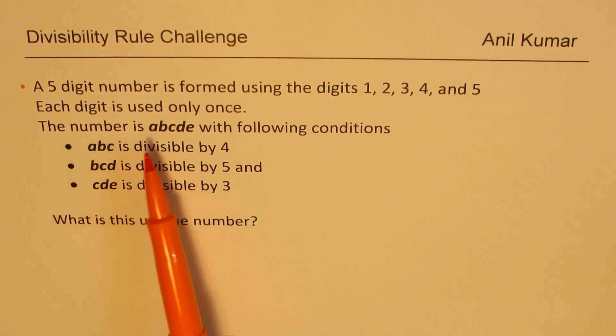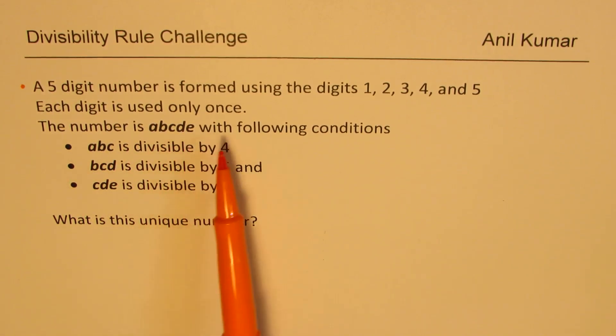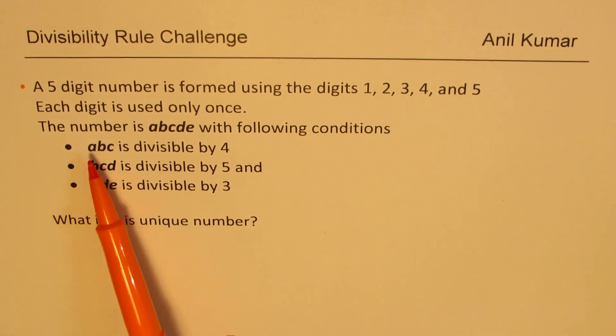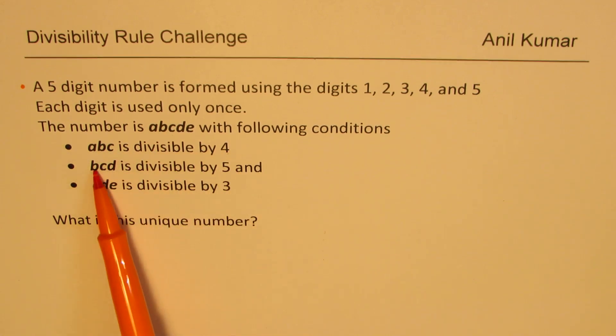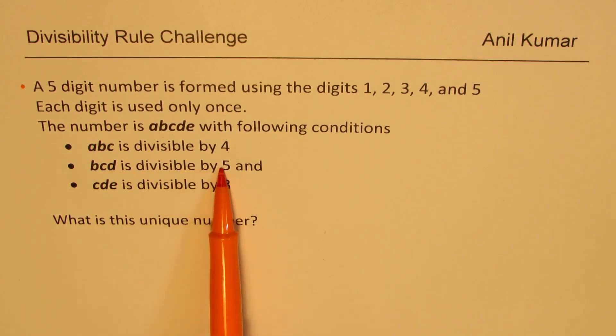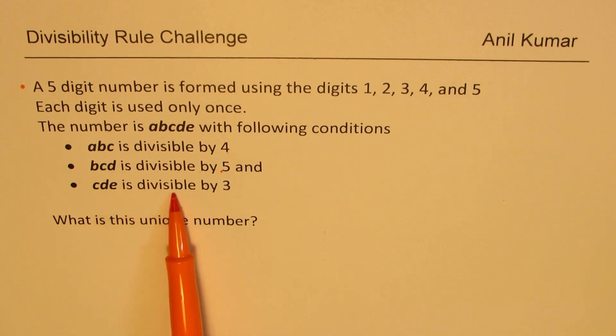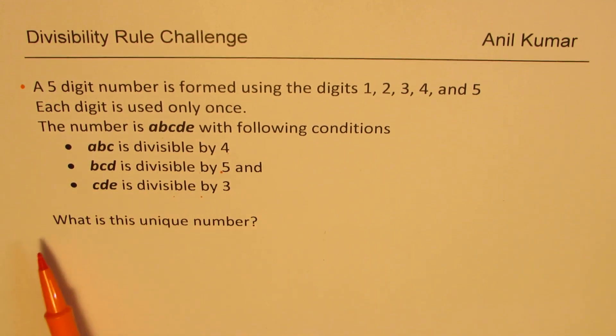The number is ABCDE with following conditions. ABC is divisible by 4, BCD is divisible by 5, and CDE is divisible by 3. What is this unique number?